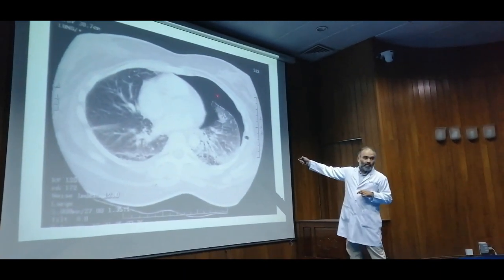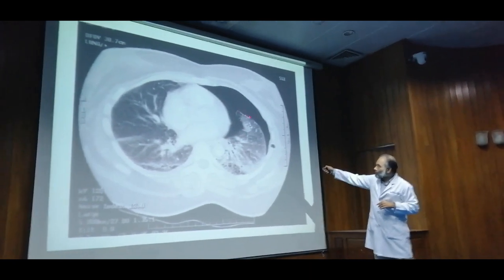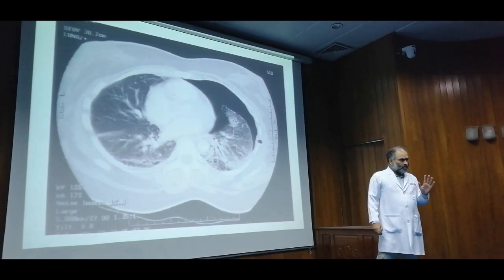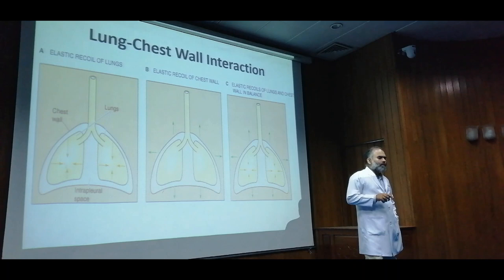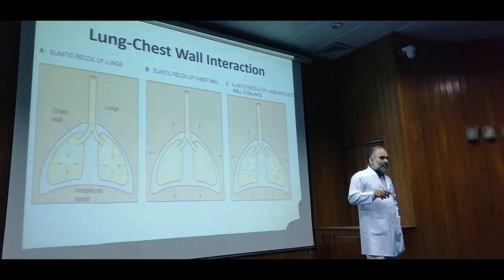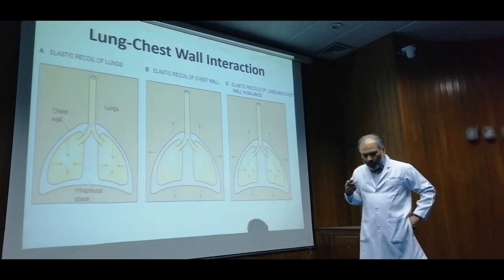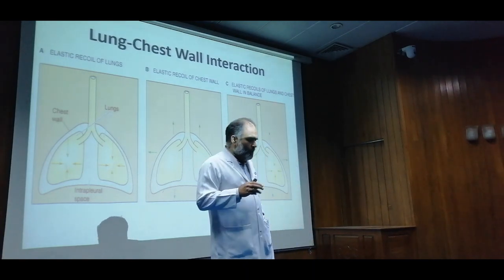There is a constant struggle between the lung and the thoracic cage. If the thoracic cage had its way, you'd walk with a really inflated chest; if the lung had its way, the lung would collapse and contract within itself. So in a normal intact human being, what would happen to the pressure inside the pleural space — zero, positive, or negative pressure? It will obviously be negative pressure.